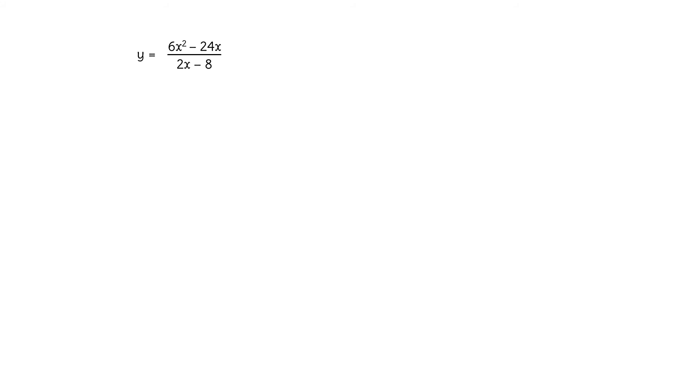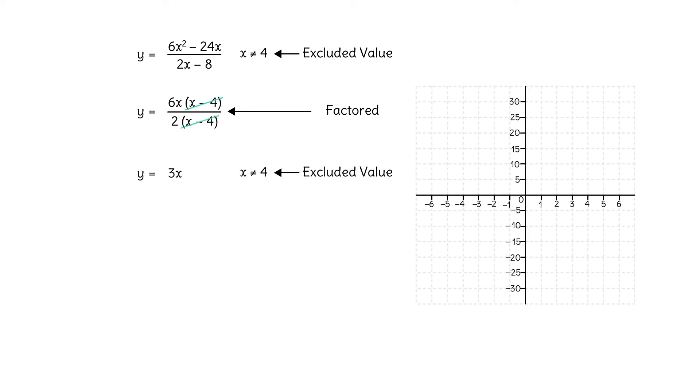How about this one? y equals 6x squared minus 24x over 2x minus 8. Let's factor the numerator and denominator. What's the excluded value? 4. What kind? 4 gives us 0 over 0, so 4 results in a removable discontinuity in the graph. And here we can cancel, so we just graph y equals 3x, a line. But we have to graph a removable discontinuity at the x value of 4.